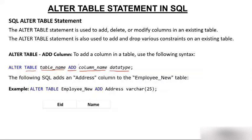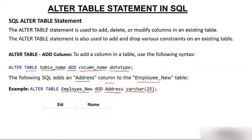The following SQL adds an address column to the employee_new table. Currently there are only two columns, and we want to add one address column. The statement is: ALTER TABLE employee_new ADD address VARCHAR(25). The moment we do this, the address column gets added to the employee_new table.